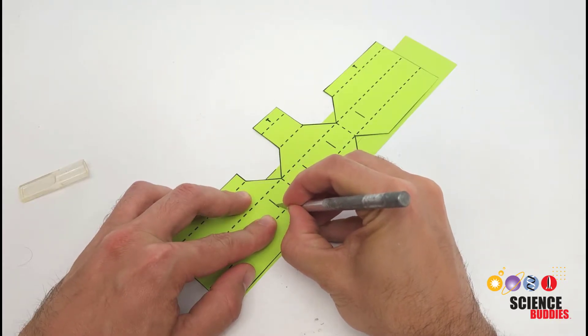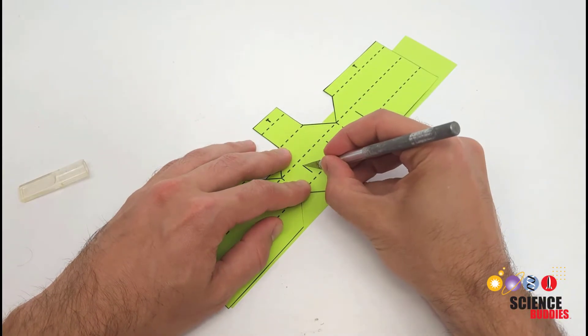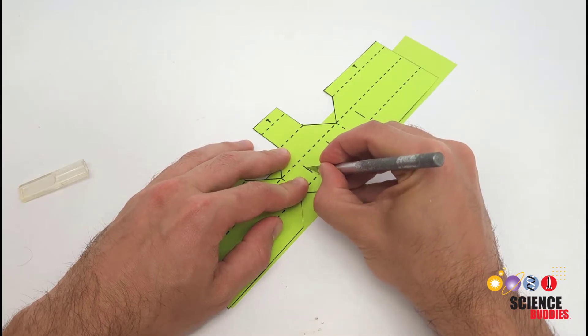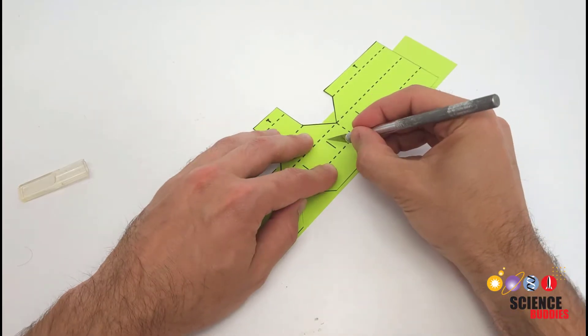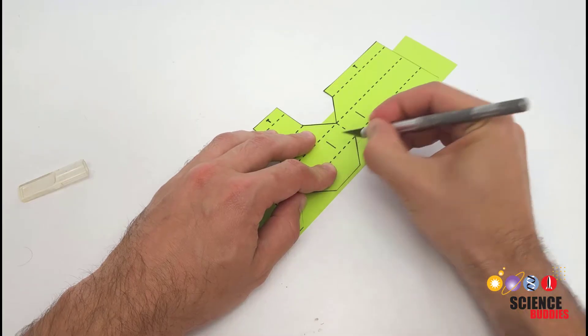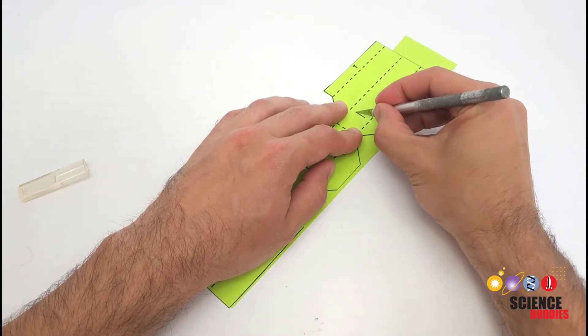Alternatively, if you have a hobby knife available, you can use that to carefully trace the lines and cut through the paper. Make sure you use something as a backing or cutting mat if you do this so you don't cut the table or work surface.